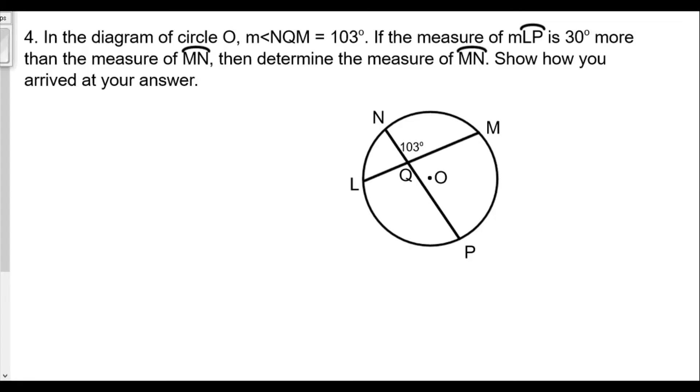Welcome back to part two of lesson 19 on chords of a circle intersecting. We're now picking up question number four. In the diagram of circle O, the measure of angle NQM equals 103 degrees.